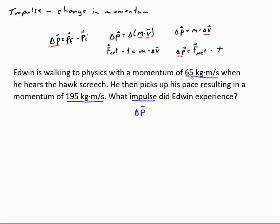So we're trying to find the impulse, the change in momentum of Edwin. We have an initial momentum given to us of 65 kilograms meters per second and a final momentum of 195 kilogram meters per second. So we want to use this equation here based on what we have: change in momentum equals the final momentum minus the initial momentum.